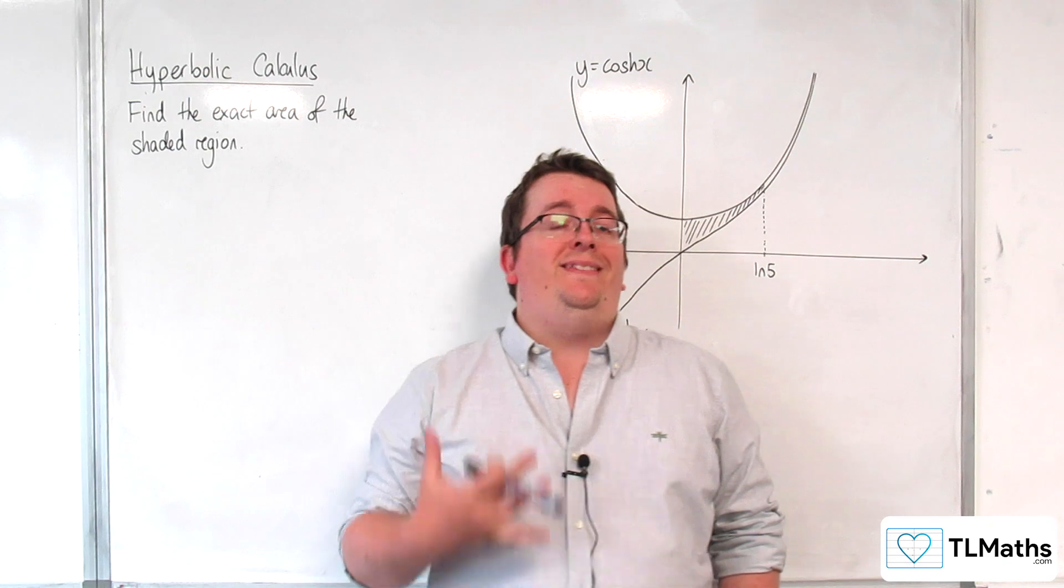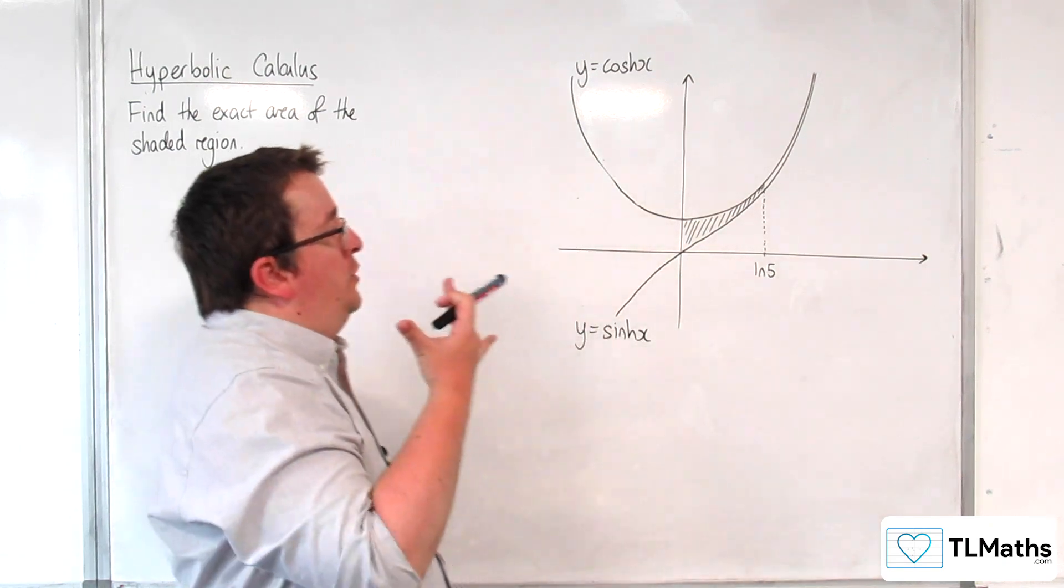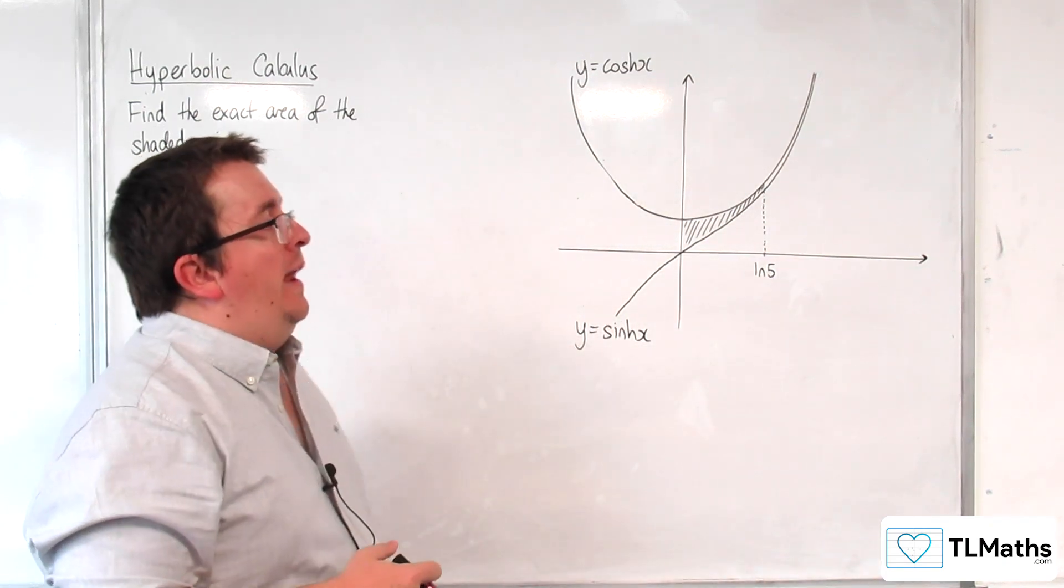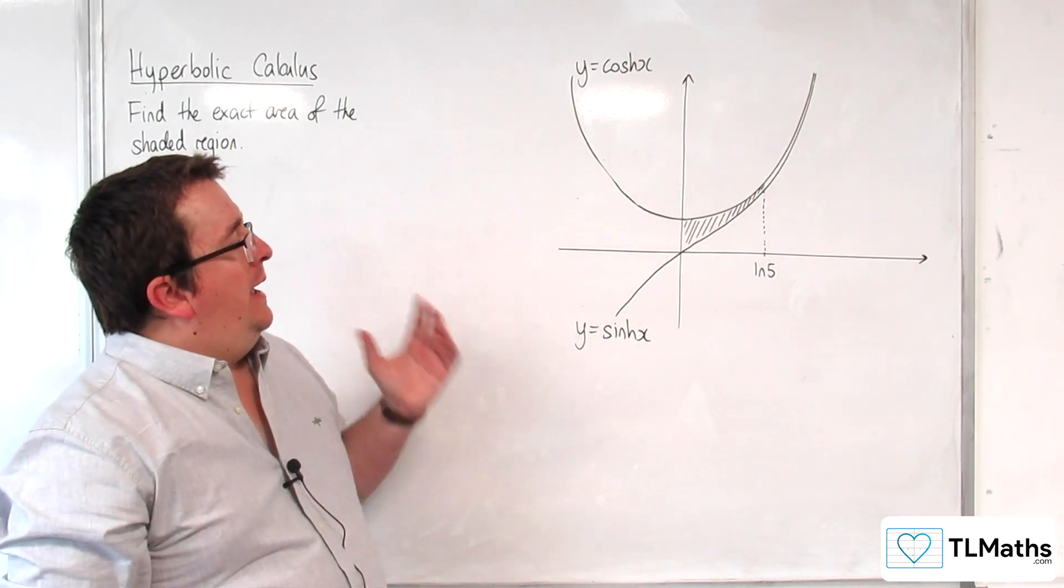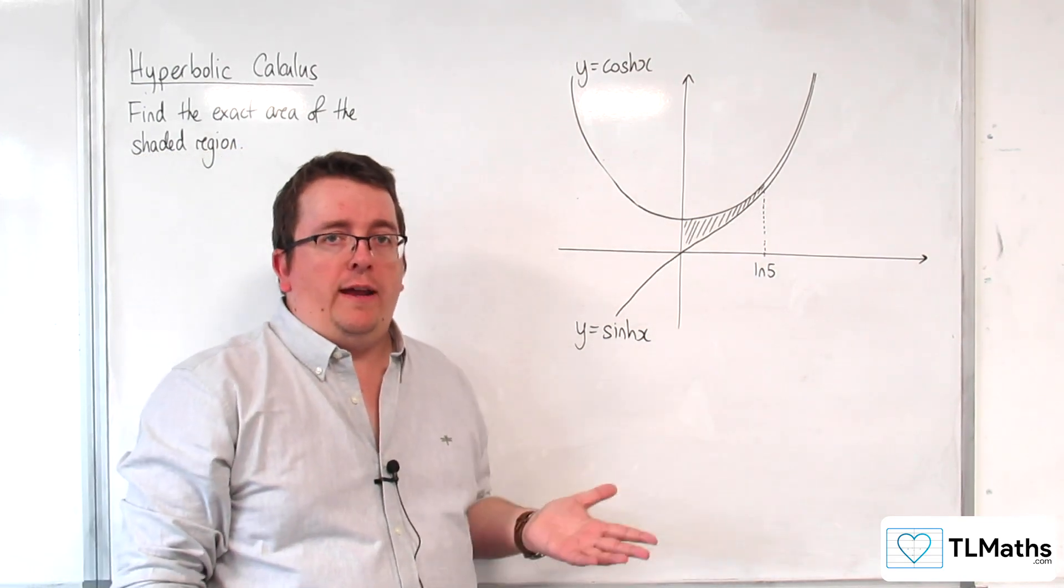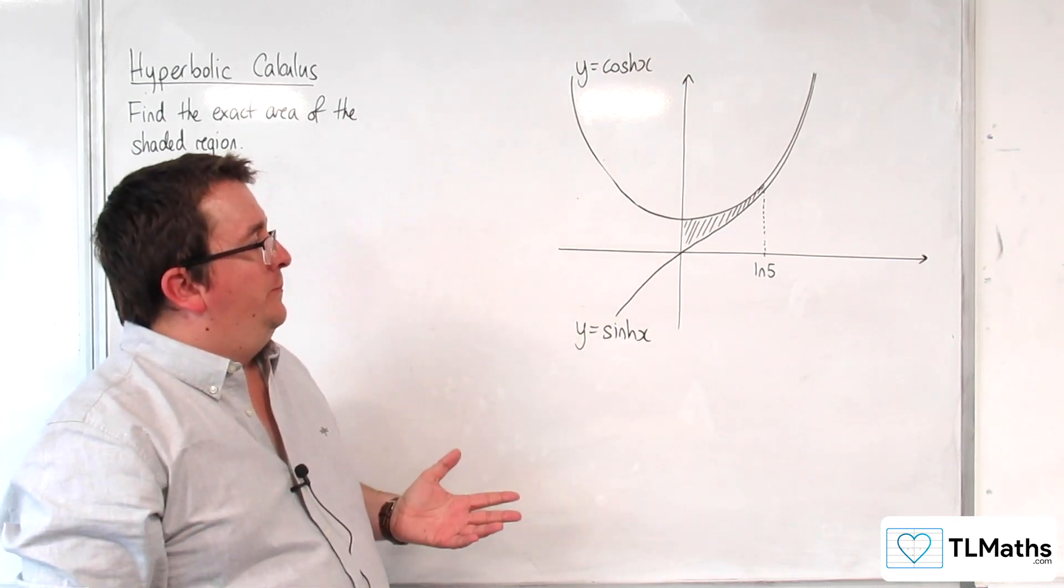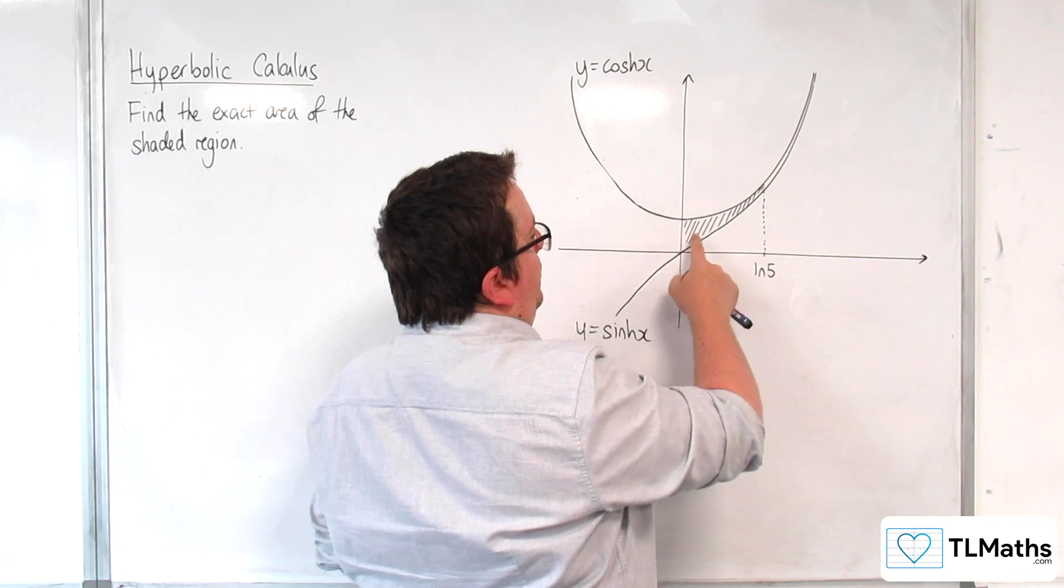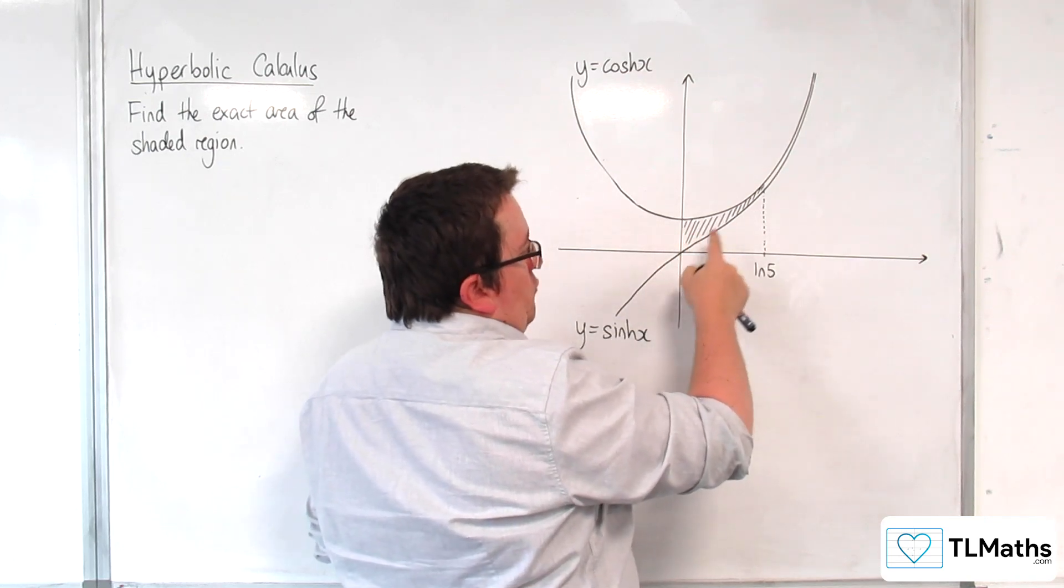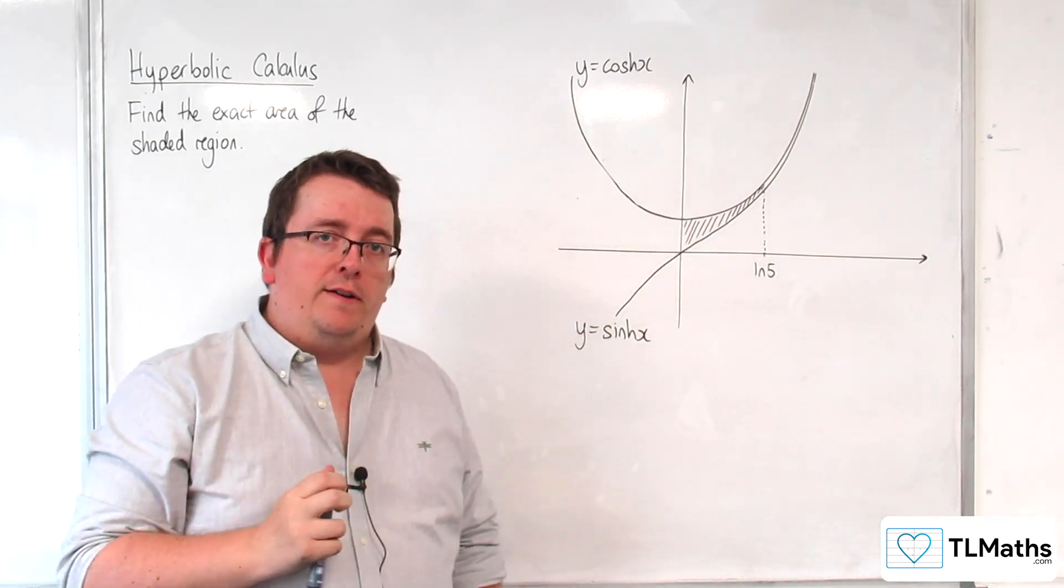In this video we're going to find the exact area of the shaded region here. Now I've drawn y equals cosh x and y equals sinh x on the same axis. And it is the area trapped between those two curves, x equals 0 and x equals log 5.